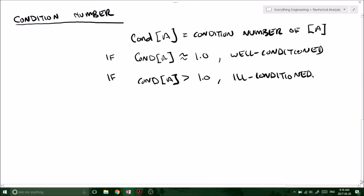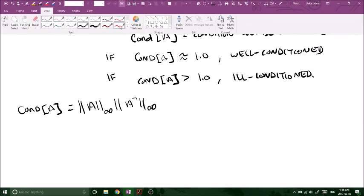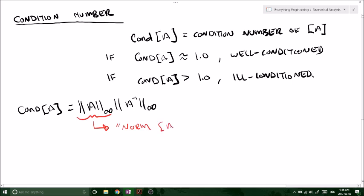So how do you go about calculating the condition number of A? We use a formula. So the condition of A equals the norm of matrix A infinity times A inverse infinity.